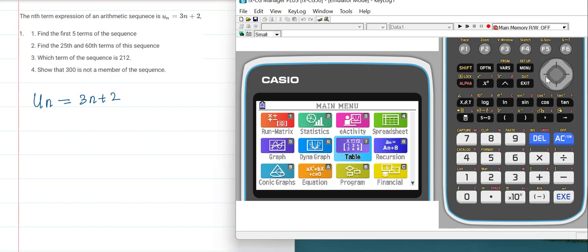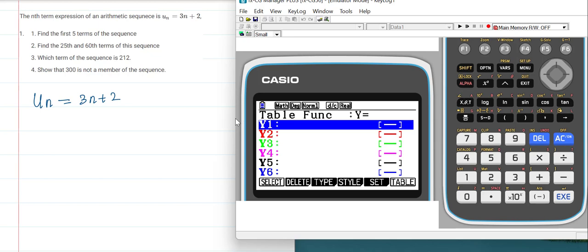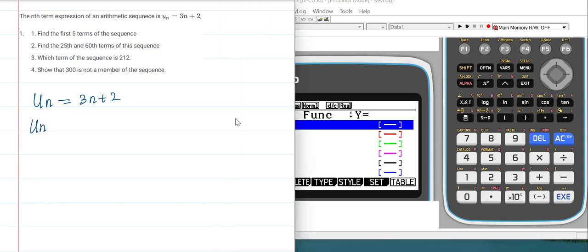What you do is choose the option Table, and here you feed this function. You have to enter the function as 3x + 2, not in terms of n. You have to substitute as 3x + 2 in this Y1.